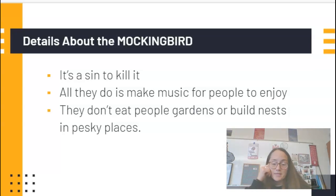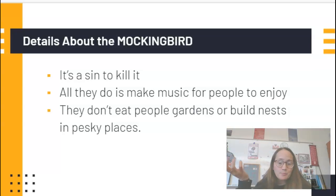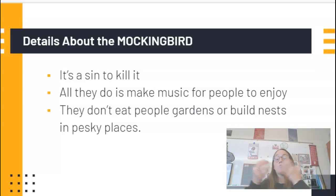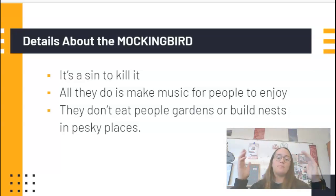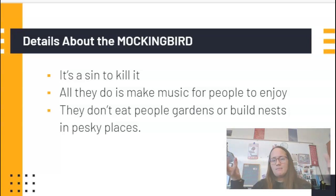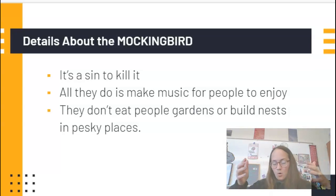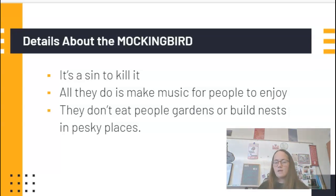We have these details — so what could the mockingbird represent beyond just a bird we shouldn't shoot? These birds don't do anything to hurt anybody; they just do nice, kind things. Maybe the birds represent people in the story who are nice and kind and don't do anything to harm anybody — people who are innocent. The fact that the text keeps saying don't kill them, don't hurt the mockingbird, tells us that mockingbirds are something that should be protected and not harmed. Maybe the author is conveying: don't harm people who are innocent.